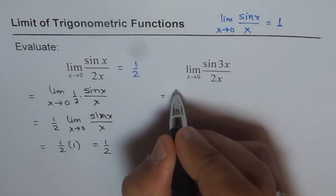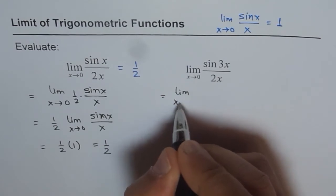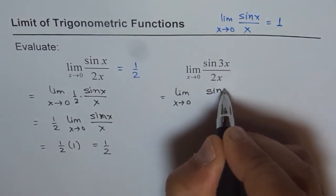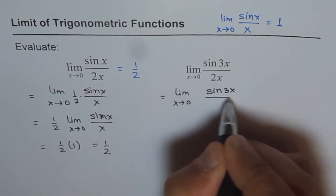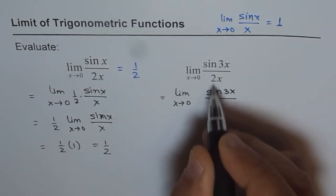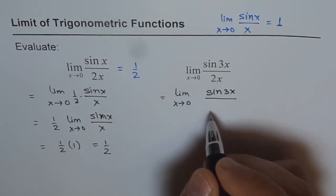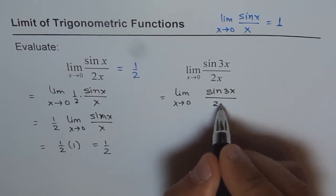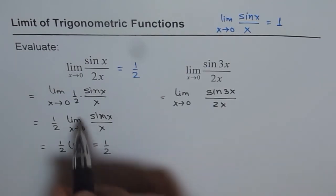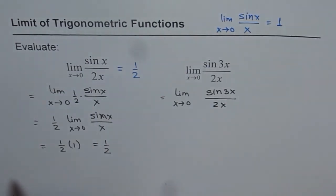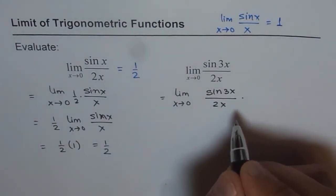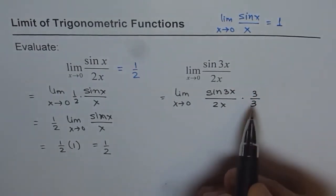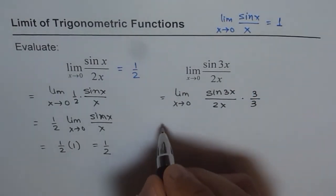So we can write this as limit x approaches 0 for sin 3x over, now we have 2x here. We don't have 3x. How to get 3x? That is a big question. In the previous question, we factored half out. Now here what we can do is, we can multiply and divide by 3. Then we'll get 3x here. Do you see that? That's the trick.